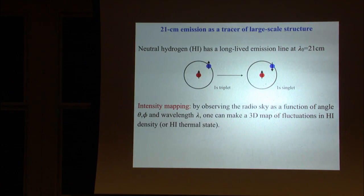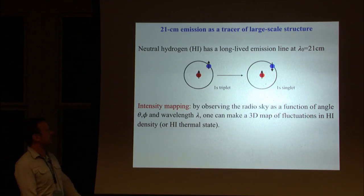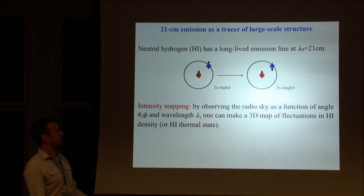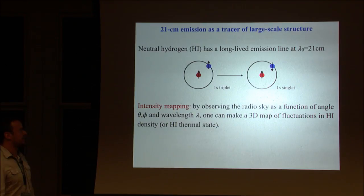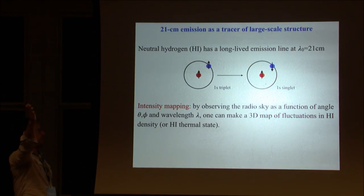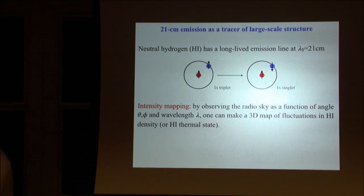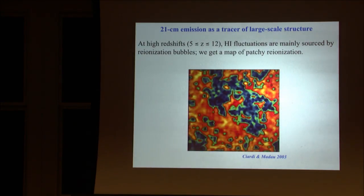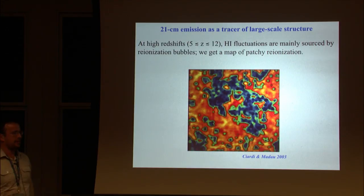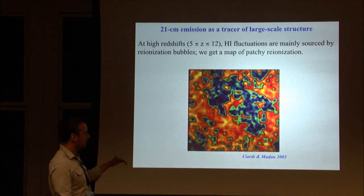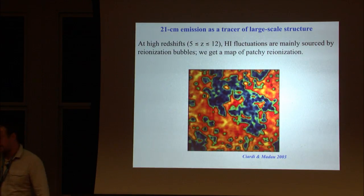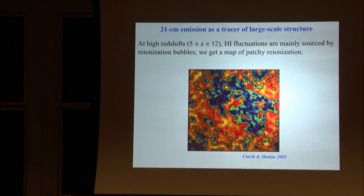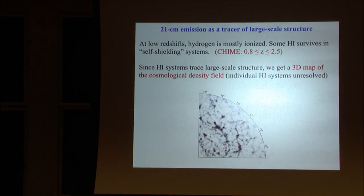As everyone here probably knows, neutral hydrogen emits at rest frame wavelength 21 centimeters. By observing this emission at different directions in the sky and with different observed wavelengths, you can make a 3D map of the universe using the redshift as the radial coordinate.